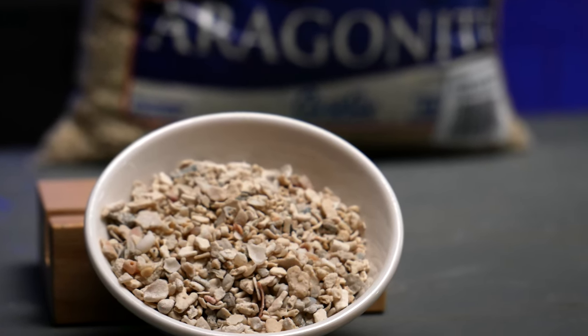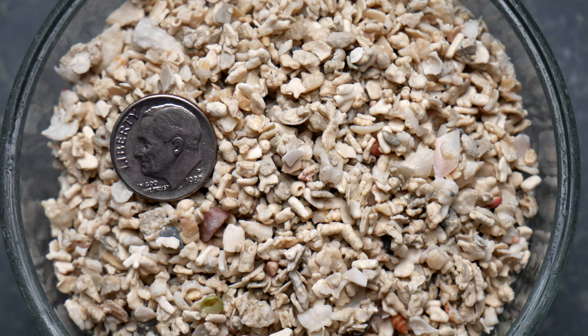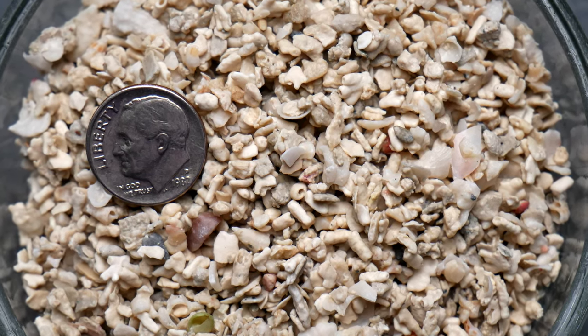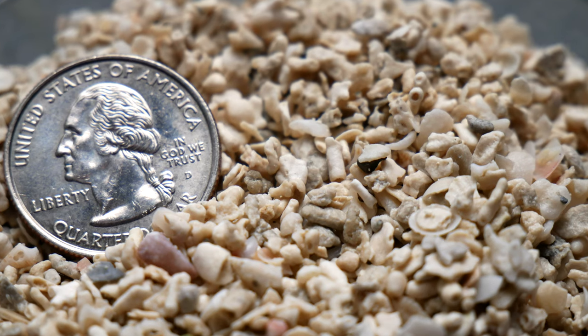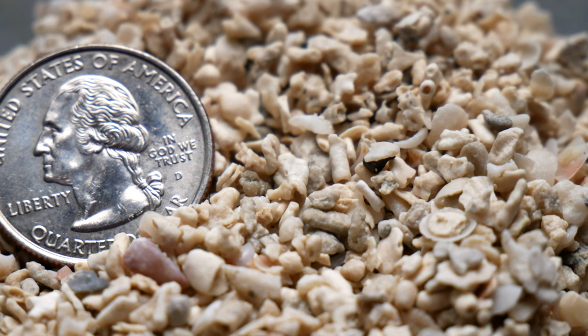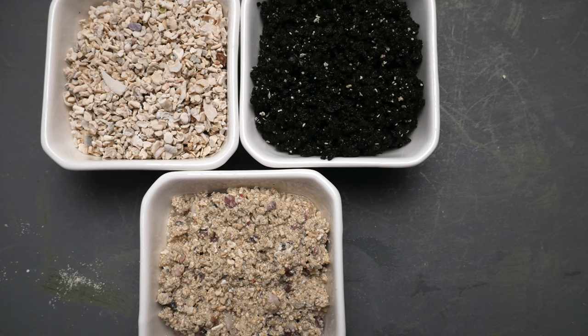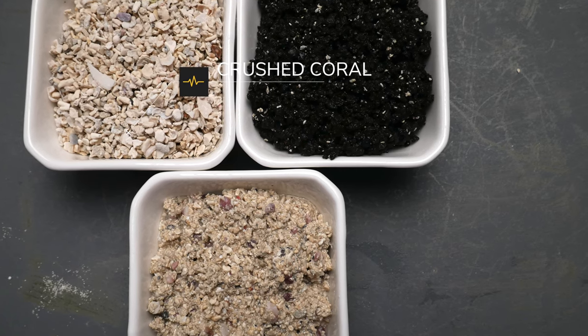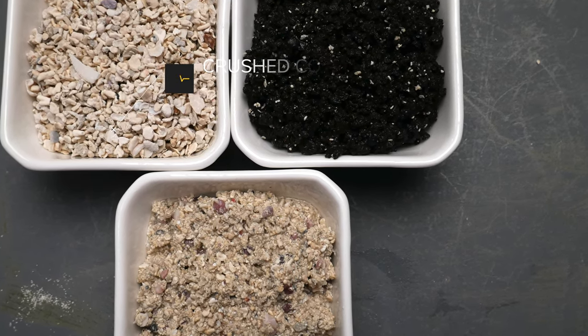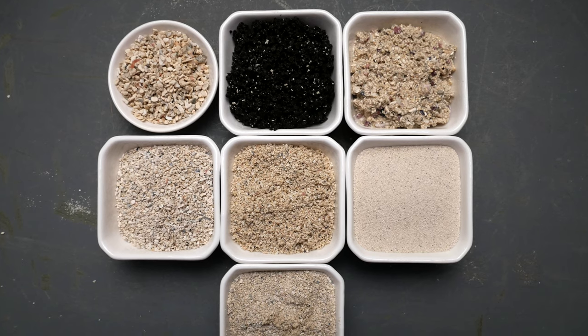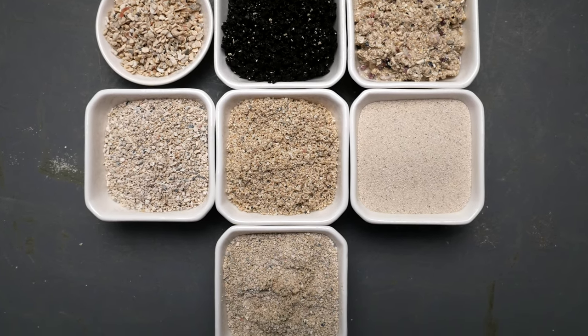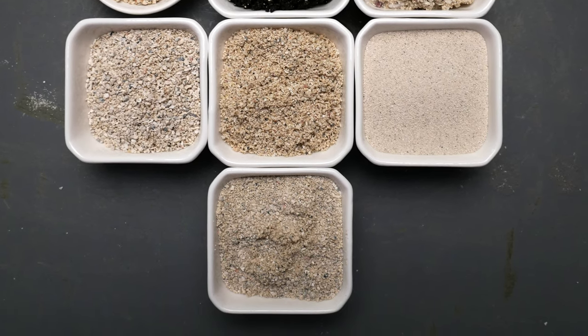Crushed coral at two to six millimeters — I would never recommend this for a beginner or really anybody doing a reef tank. The pieces are so large that fish waste and fish food will fall through and stay on the bottom of your tank unless you do heavy, regular gravel vacs. You could do a mix of a special grade or sugar fine and then add a little crushed coral on top, especially if you want certain creatures like pistol shrimp — but rather than going straight crushed coral, I'd just go with special grade.